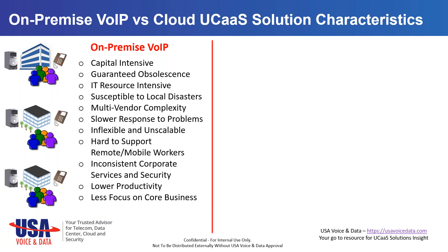Let's look at the difference between on-premise VoIP and a cloud-based UCaaS solution. On-premise VoIP is capital-intensive — you have to buy the big box, and as soon as you buy it, it's immediately obsolete. It's IT-resource intensive, you have no redundancy for local disasters, and you're dealing with multiple vendors: equipment, telephone service, and connectivity. It's not very scalable, not very flexible, and hard to work with remote workers.